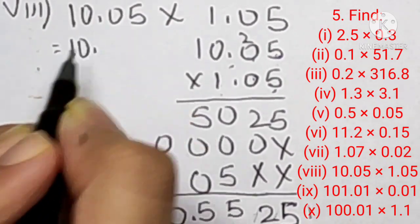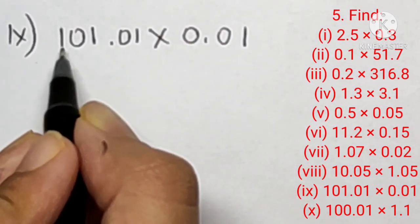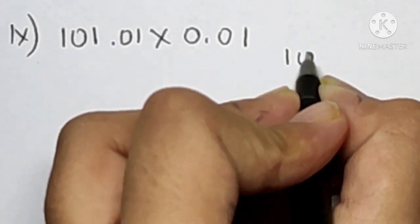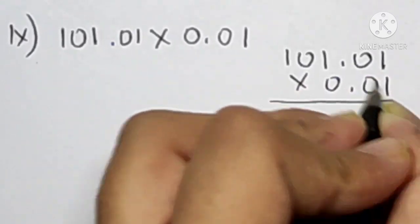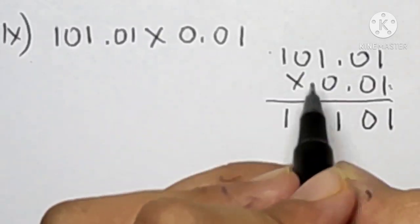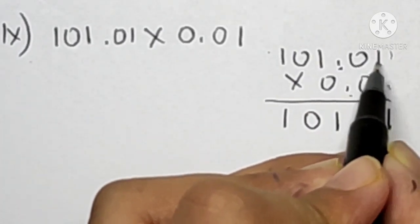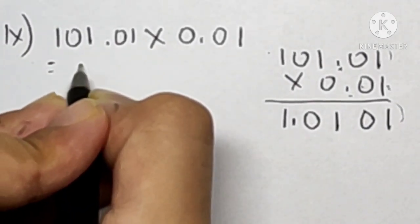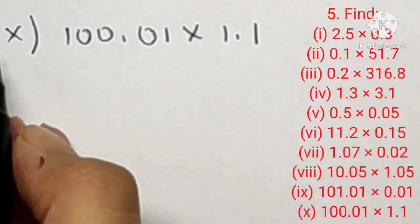Question number five, ninth part is 10.01 into 0.01. Let's multiply: 1 ones are 1, 1 zeros are 0, and 1 ones are 1. There are two decimal points, both two digits from the last, so 2 plus 2 equals 4 digits from the last. Our answer is 0.1001.